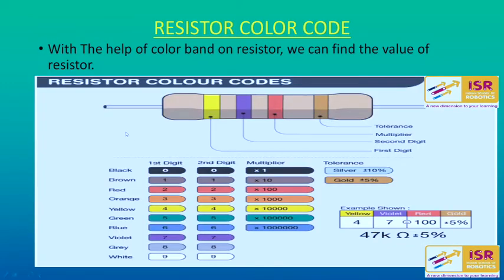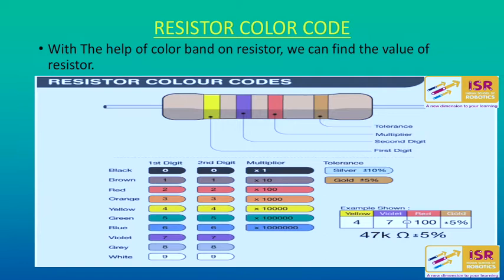We can calculate the value of resistors because we have different types. You can have three bands, four bands, or even five to six bands on your resistors. This is the color coding through which we calculate the resistor value. For example, yellow represents four, violet represents seven, the third band is the multiplier shown in red, and the last band in gold indicates tolerance. The first two digits hold the value and the third is the multiplier.